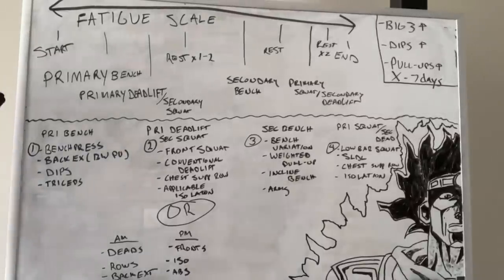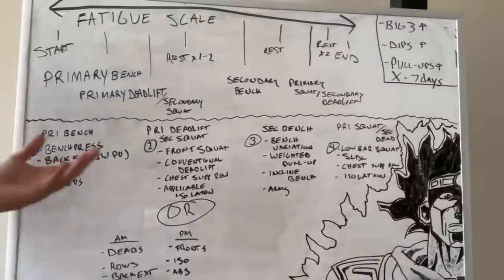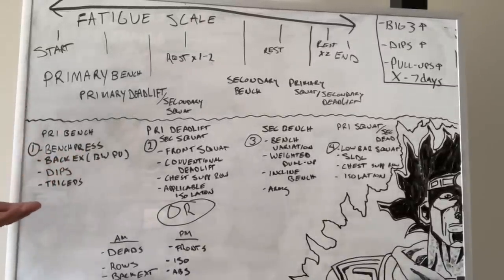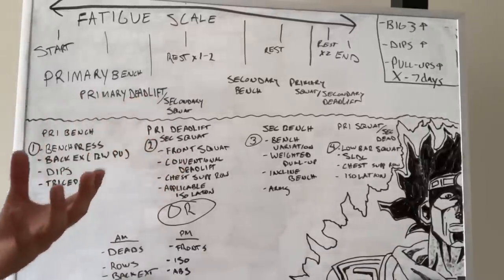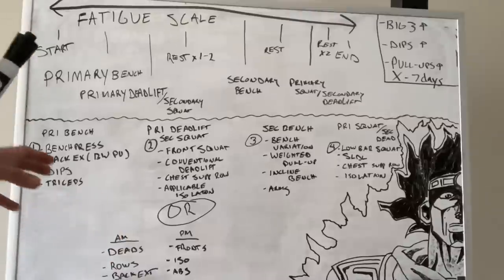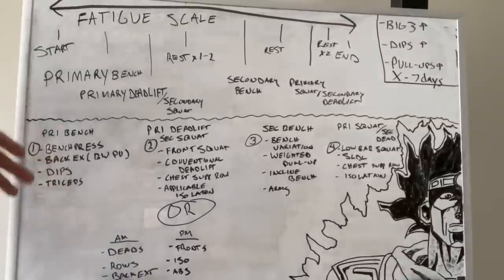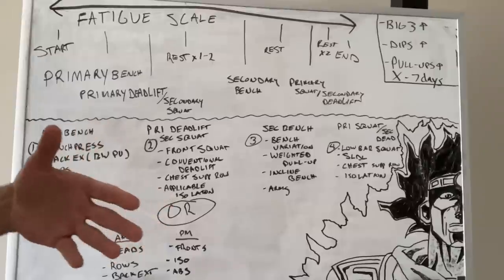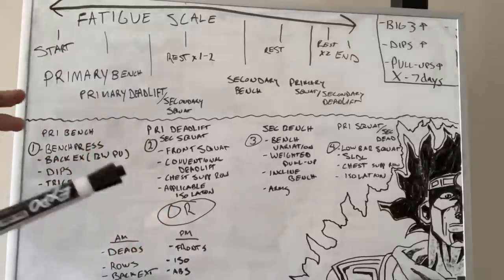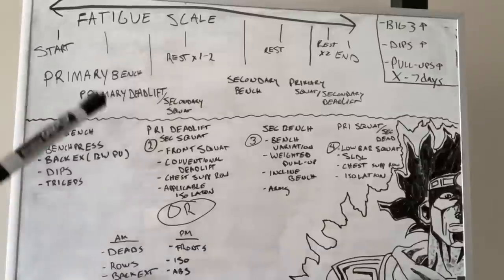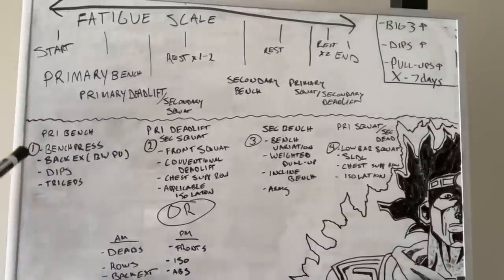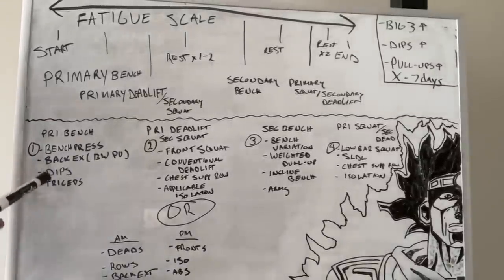After that, I'm doing some sort of back work — for example, bodyweight pull-ups directly after the bench press work. After that, I'm doing dips. If you want to know how to implement dips specifically, watch the weighted dips and weighted pull-ups video I just made — it's the one with the Fist of the North Star guy pointing at you saying you're a chad. After that, I'm doing triceps.